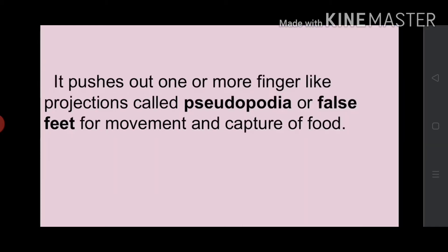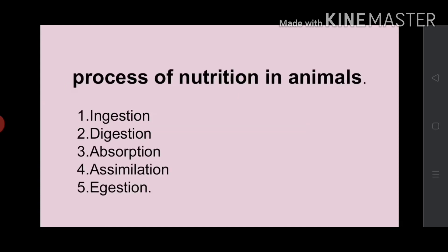Amoeba pushes out one or more finger-like projections called pseudopodia or false feet for movement and capture of food. Like human beings, in the case of amoeba also, there are five steps involved in the process of nutrition.